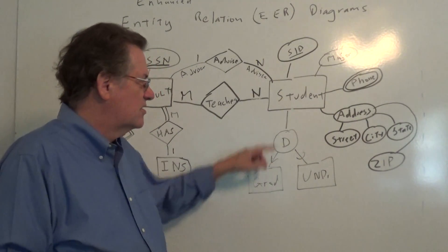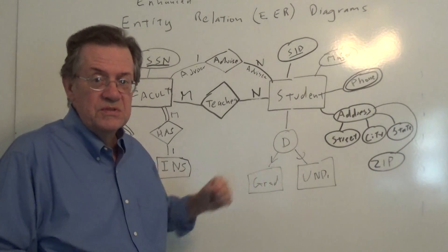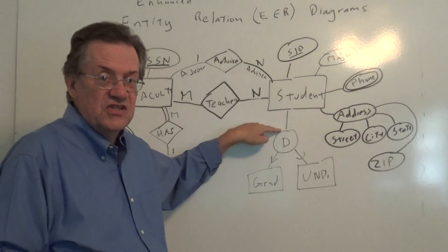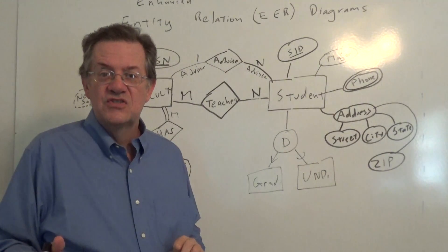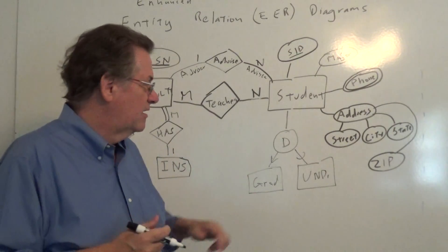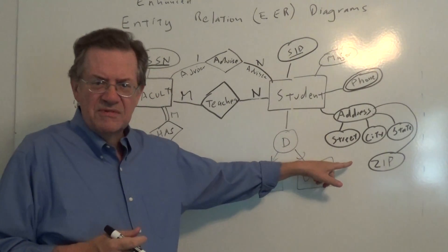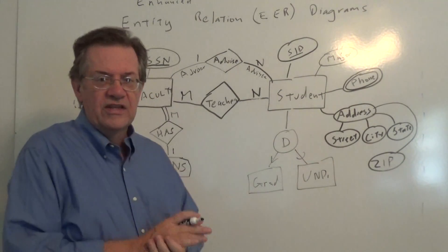Another thing is, would every student be one of these two groups? If so, we would have total participation here. Well, we'll leave that out for now because let's assume a student's just taking a class, part-time student. He or she is not grad, not undergrad. And if that were the case, we might have something like part-time over there. So we would not have every student fitting into one of these two particular categories.